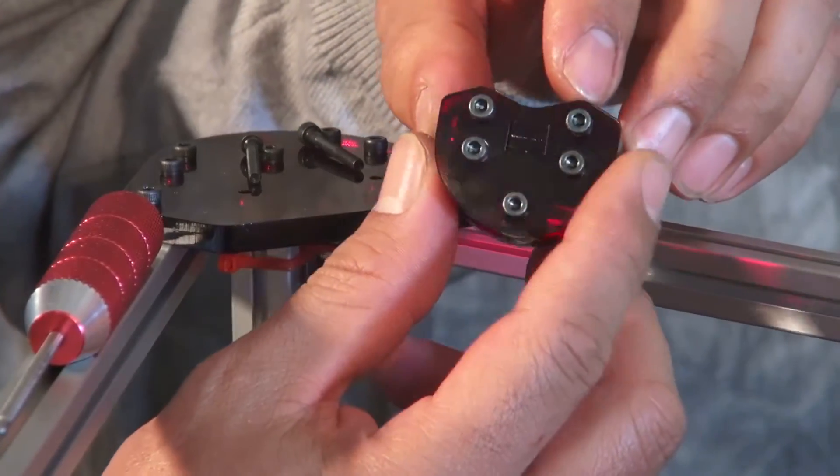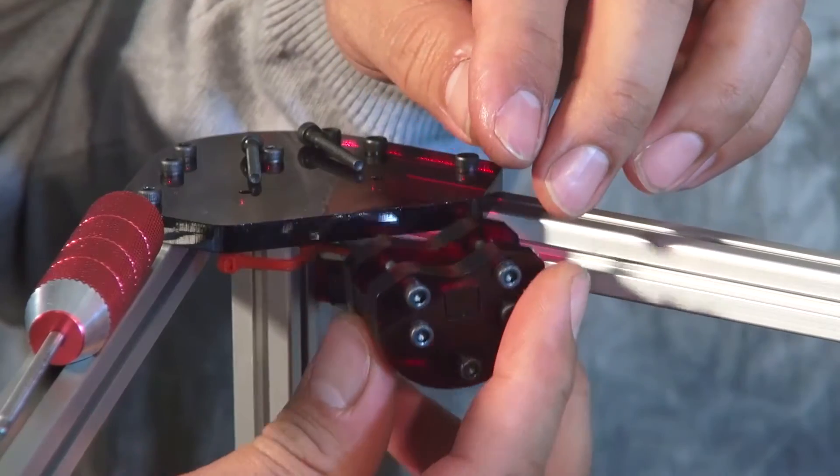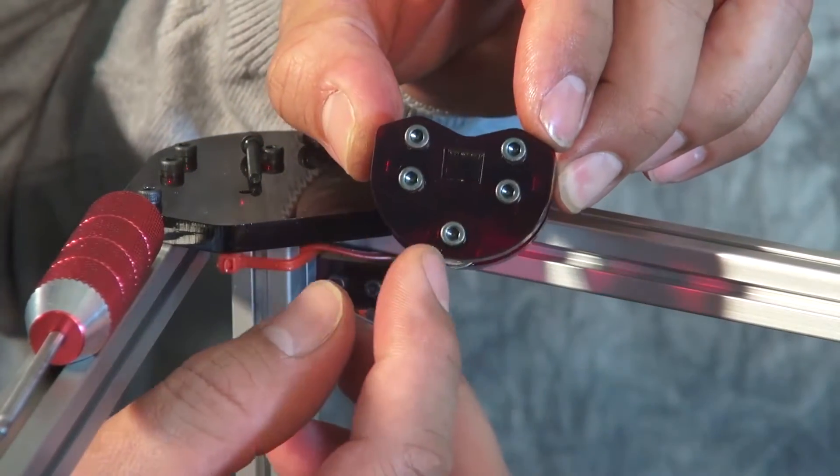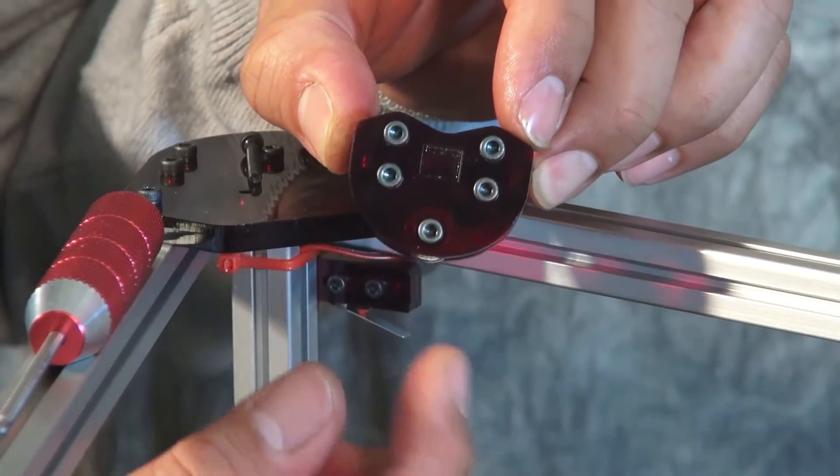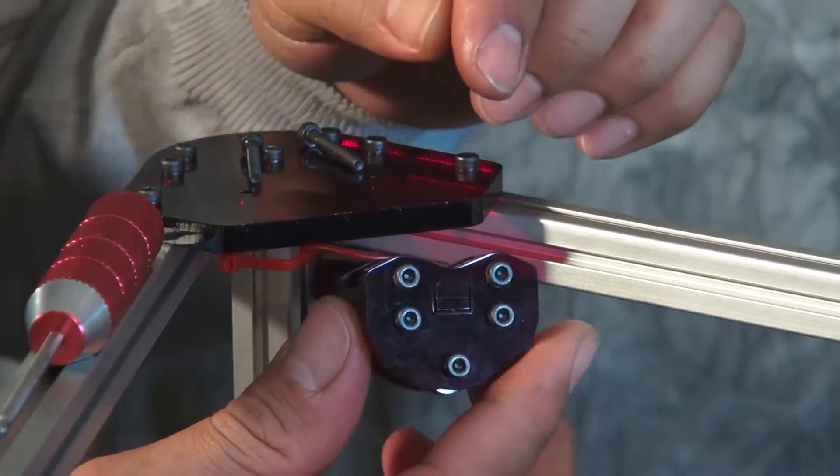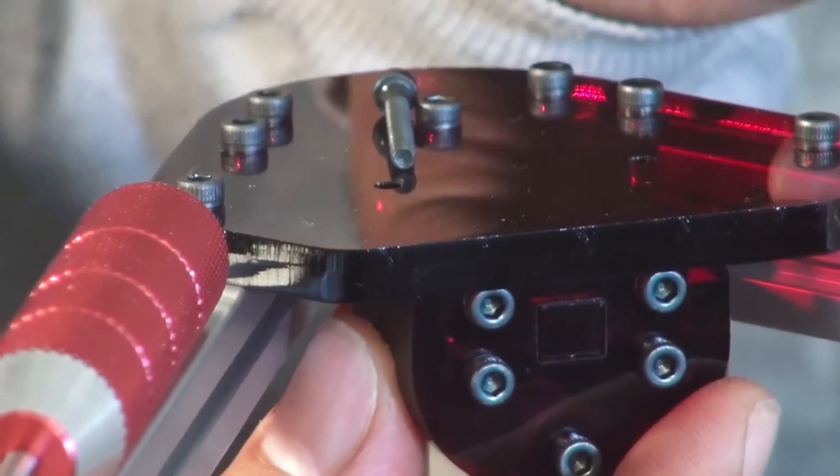So now we need to attach this guide to the top of our frame. It doesn't matter which side you face this when attaching it, but for uniformity you want to make sure all three of them are facing the same. I prefer with the screw bolt head pointing inwards.